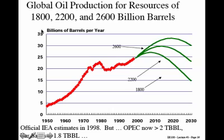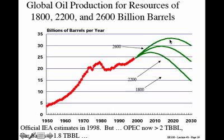Here we see world oil production as a function of year in billions of barrels per year. We can see a relatively steady increase up until now and several projections in the future — one if the earth has 1.8 trillion barrels of accessible crude, and another if the earth has 2.6 trillion barrels. Each model has its own estimate of the peak year: for 1.8 trillion barrels, we've already peaked at about 2005, and for 2.6 trillion barrels, we shouldn't peak until about 2020.